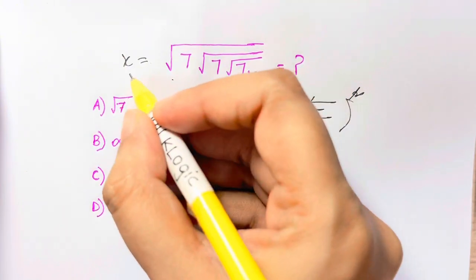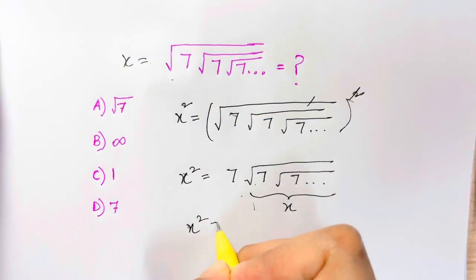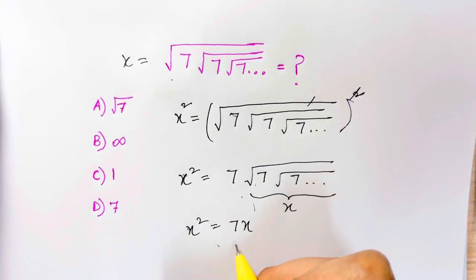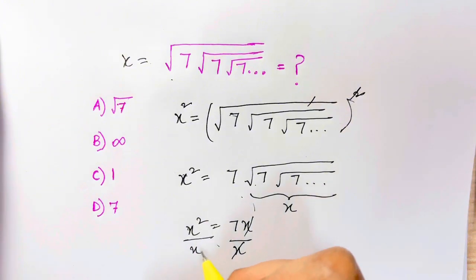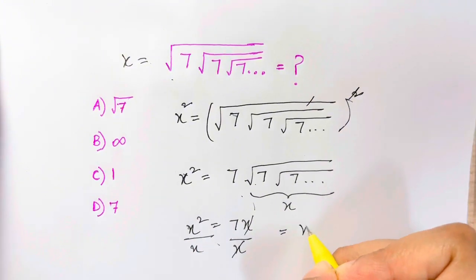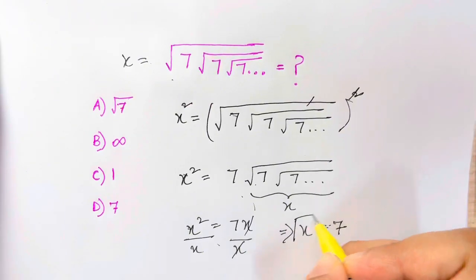Now if you see, this part is again repeating, which is x. So we have x square is equal to 7x and divide both sides by x. So here it gets cancelled and here we have x is equal to 7 and that's your answer.